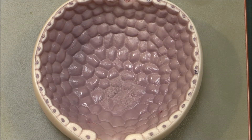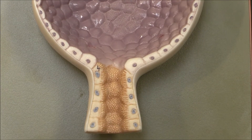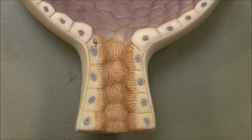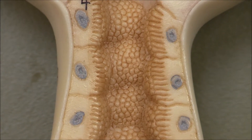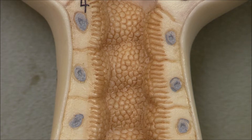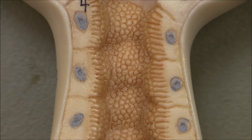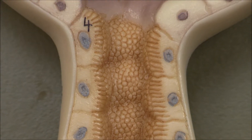Once the glomerular filtrate has formed, it goes down into the first part of the renal tubule — that is the proximal renal tubule. As we can see, this has got a brush border composed of microvilli, which greatly increases the internal surface area for the reabsorption processes that need to take place.